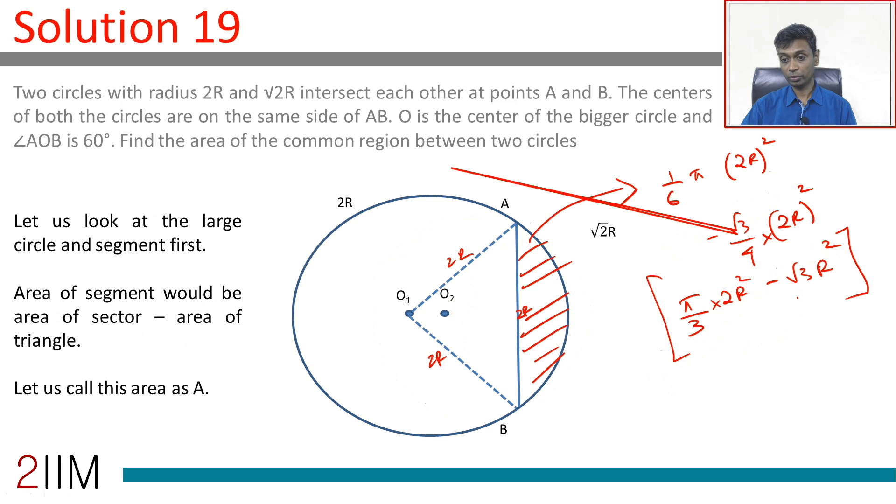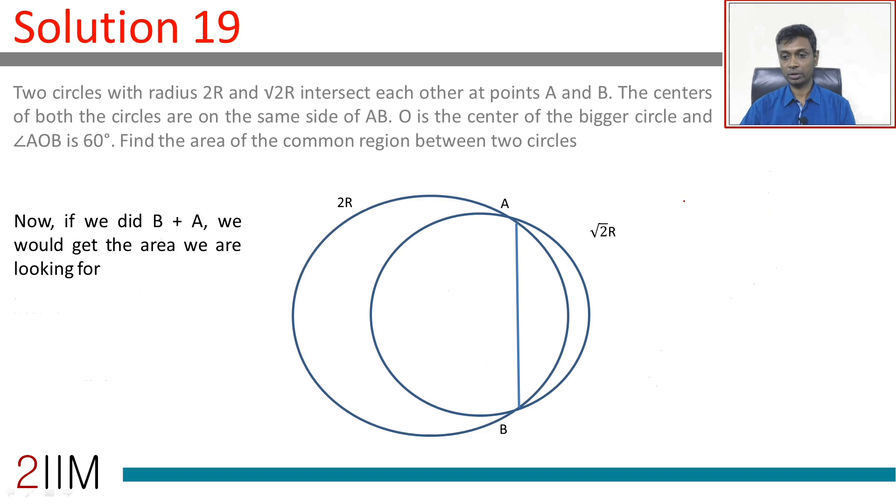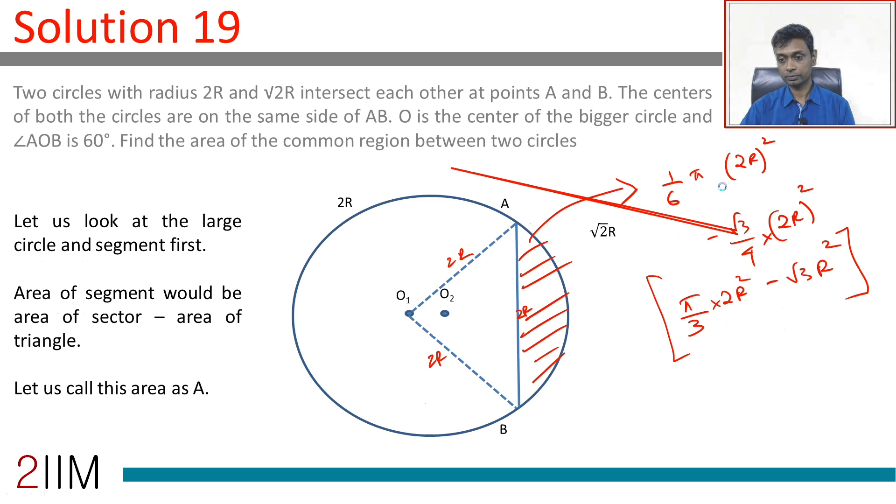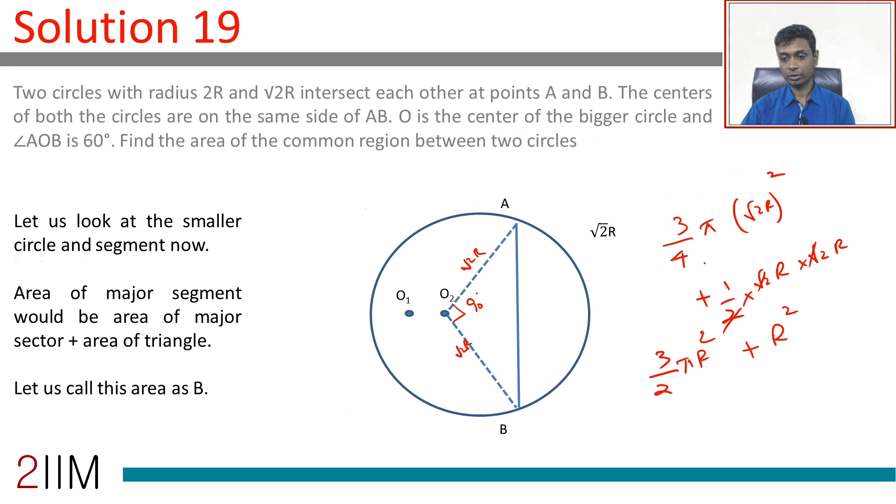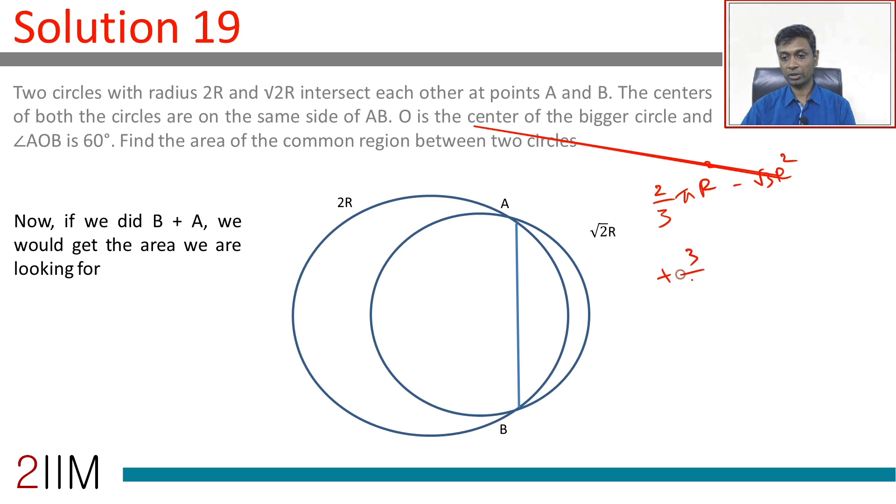Now, we are going to put these two together. So, we are going to add up 2 by 3 pi R square, minus root 3 R square, plus 3 by 2 pi R square